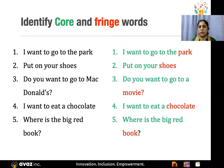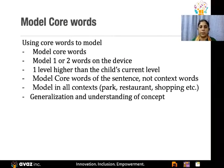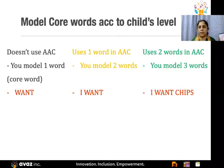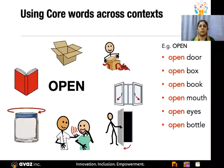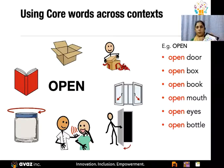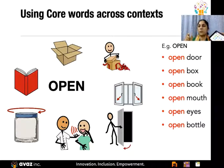If the child doesn't use AAC at all, you model just one word. If he already uses one word, you model two words — just one level higher. If he uses two words, you model three. For example, with the word 'open' — use it in multiple contexts: 'open the door,' 'open the box,' 'open your mouth,' 'open your eyes,' 'open the bottle.' Using the same word 'open' in multiple contexts is how the child learns to generalize and understand the concept. That consistency is what enables learning.